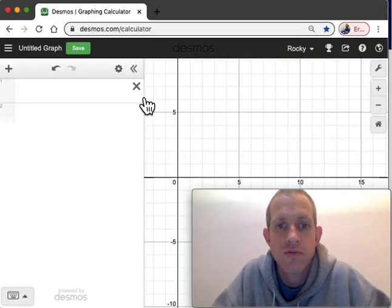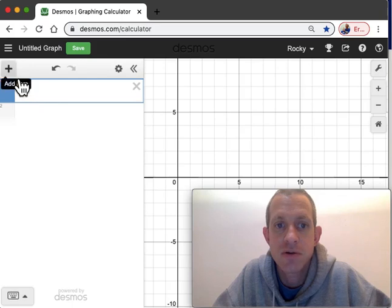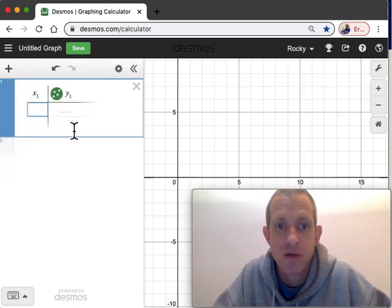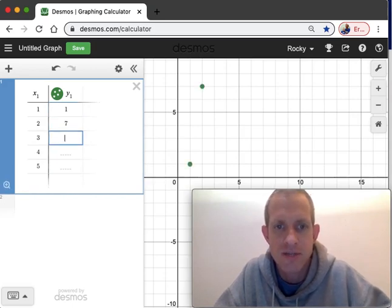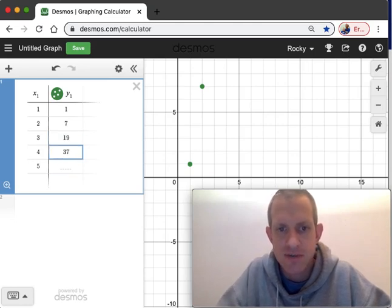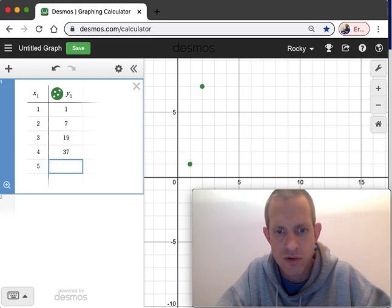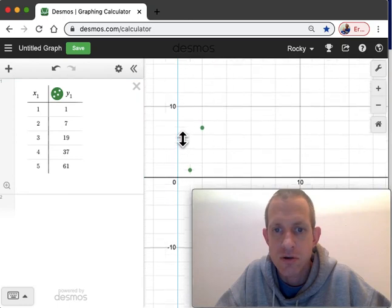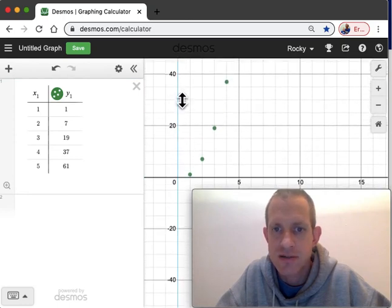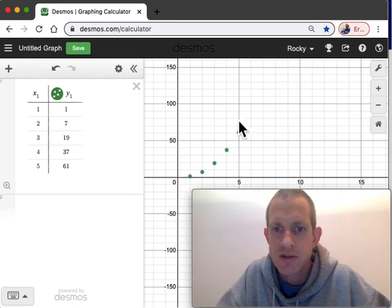So, if we want to make this happen in Desmos, the first thing we need to do is type in the data. And so, I'll get out a table, and I'll type in my x values, or the n's. So, 1, 2, 3, 4, 5. And then, the y values are going to be the numbers that we had gotten. Like, 1, 7. After 7 was... Let's see. We add 12, right? So, 19, and then 37, and then we add 24 to get 61, I think. So, let me just hold shift and drag this so I can see those numbers a little bit more, obviously.